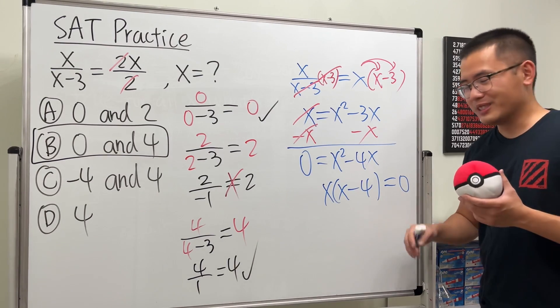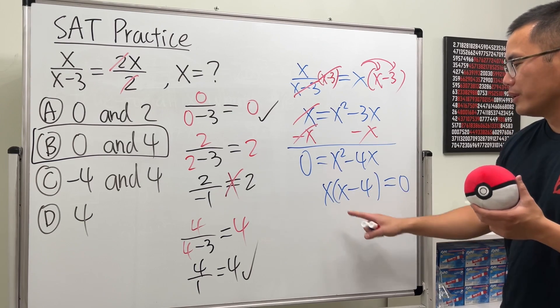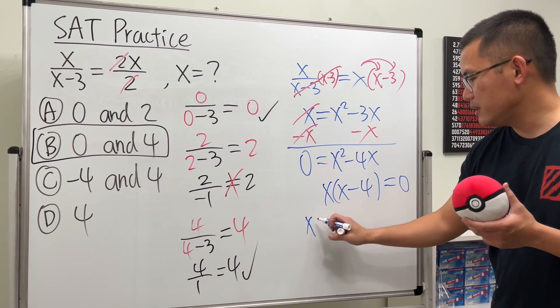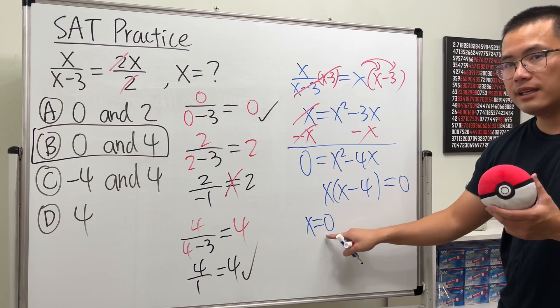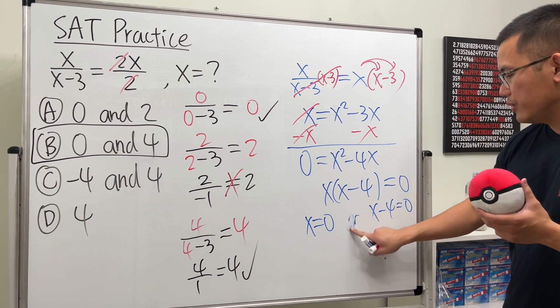Anyway, x times this is equal to zero, that means the first thing has to be zero, namely x has to be zero, or x minus four has to be zero.